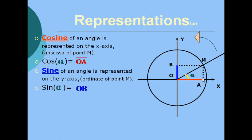Taking triangle OMA, it is a right triangle as stated before. To represent sine alpha, it is opposite side over hypotenuse. The hypotenuse equals 1, therefore sine alpha is equal to the opposite side, which is MA.